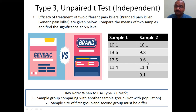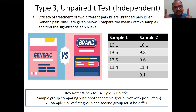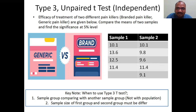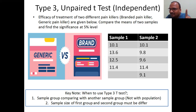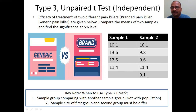Sometimes the question won't name the test directly. First check: is it sample vs. population, or sample vs. sample? Sample vs. population means Type 1 or Type 2. Sample vs. sample means Type 3 or Type 4. If the number of samples are equal (e.g., 4 and 4), choose Type 4. If unequal (e.g., 4 and 5), choose Type 3.